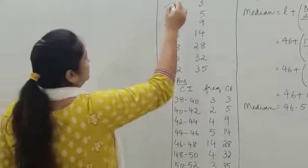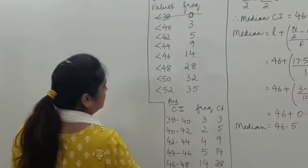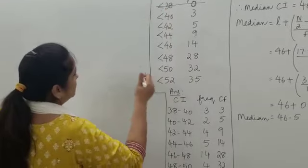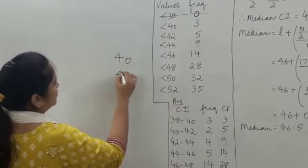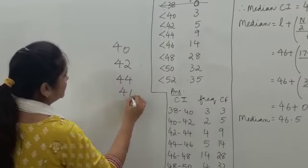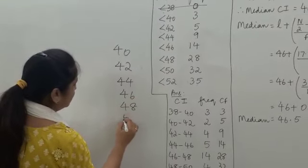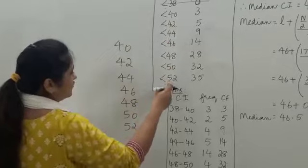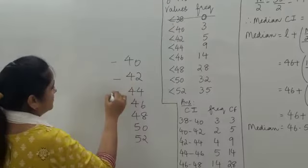We can ignore the first one because its frequency is 0. The other upper limit values are: 40, 42, 44, 46, 48, 50, and 52. These values form the upper limits of the class intervals.